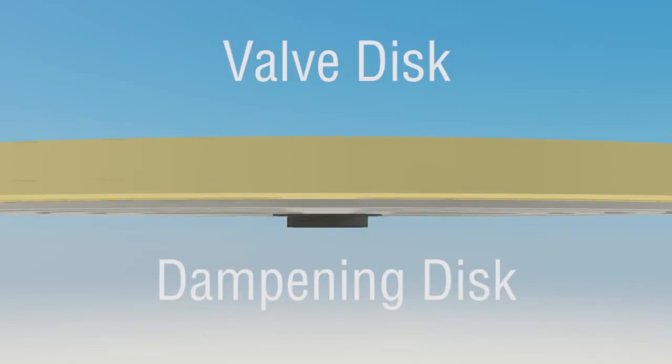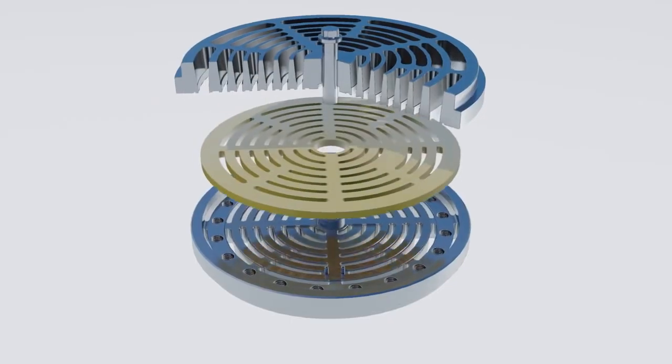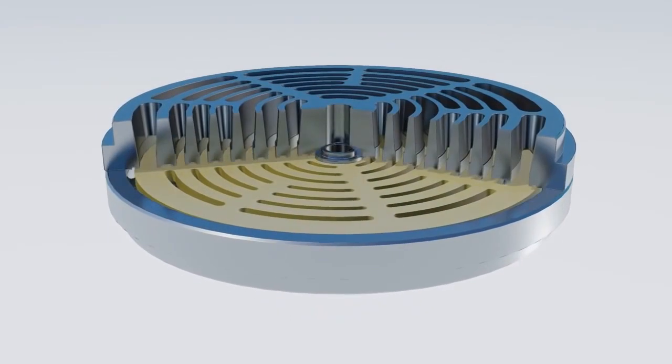When the valve opens, both discs accelerate rapidly but the brunt of the impact is absorbed by the hardened secondary disc. The secondary disc also dampens out any possible flutter the primary disc would exhibit due to high speed or high differential pressure bounce.